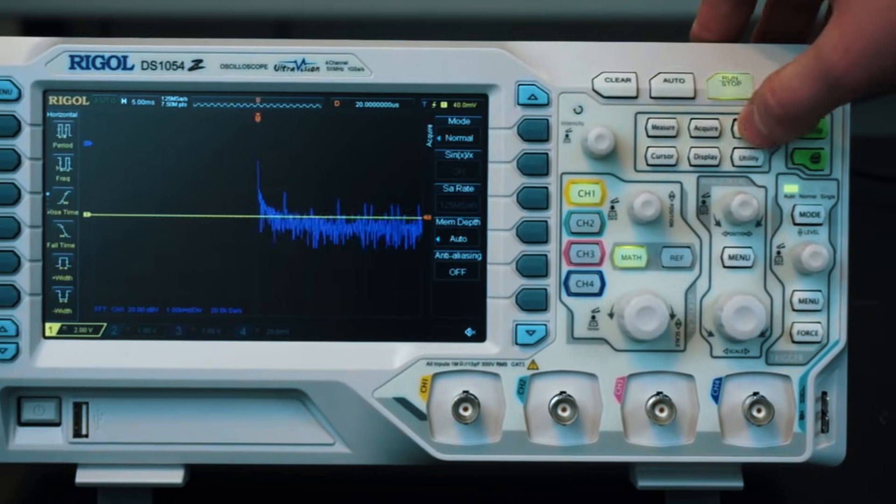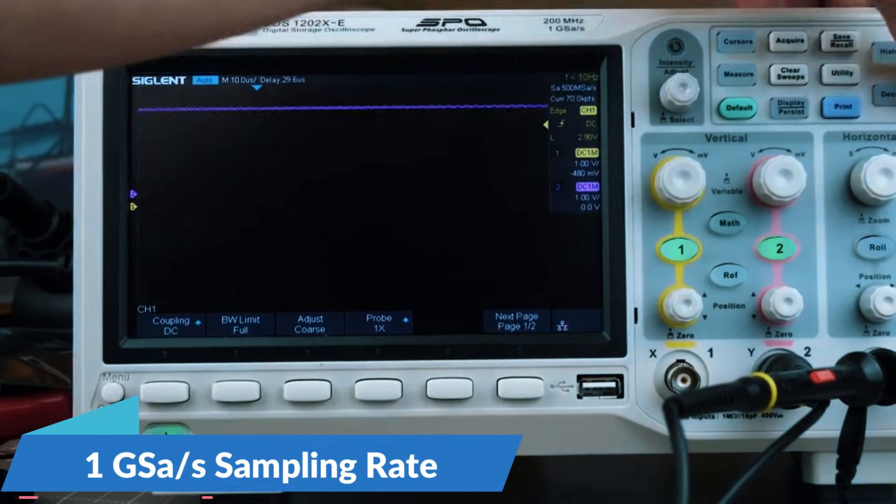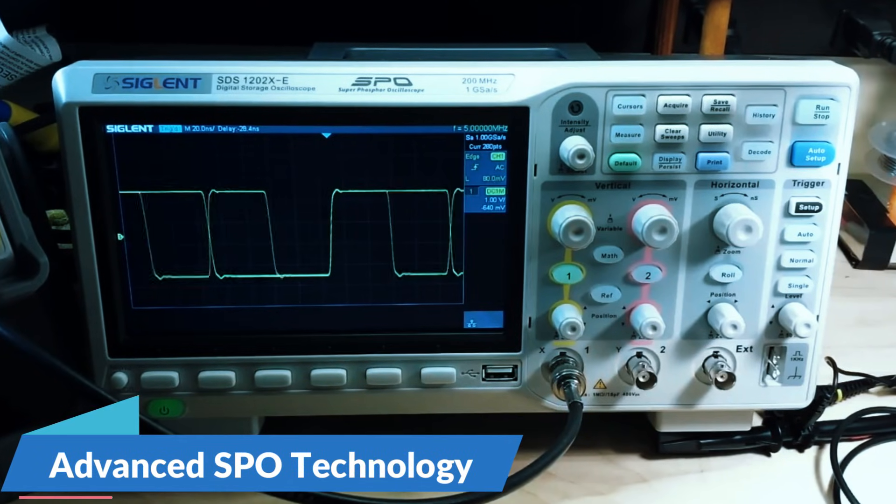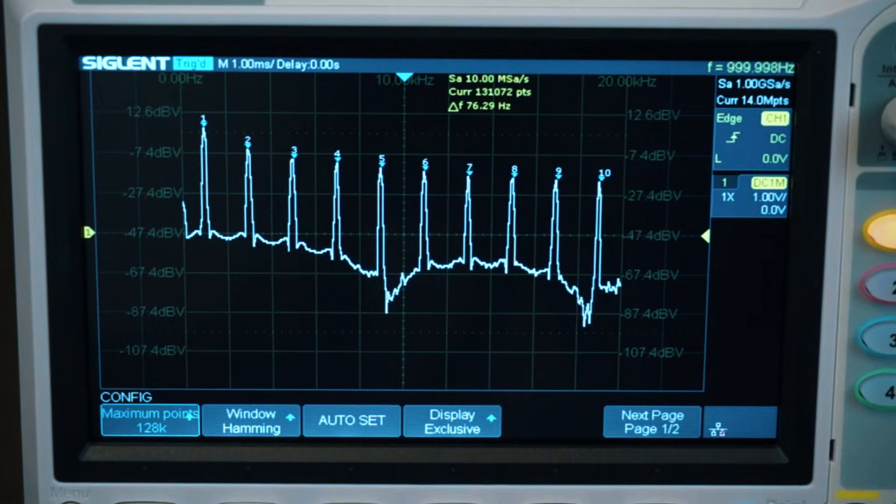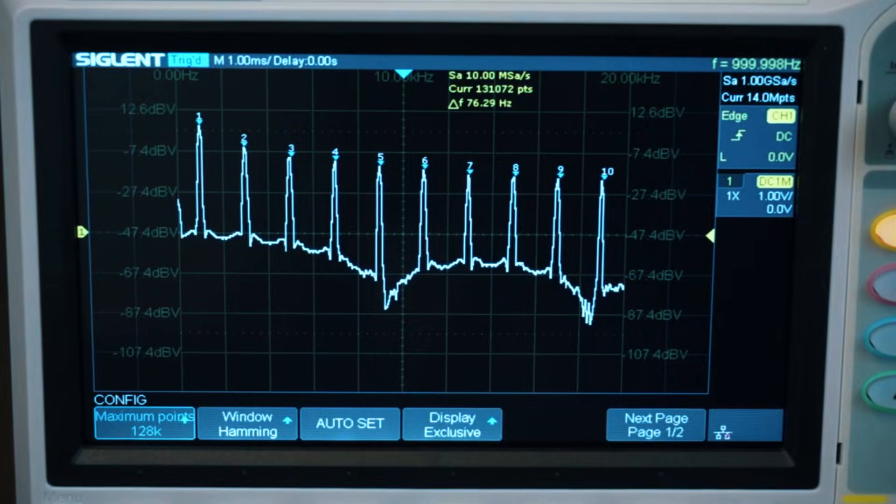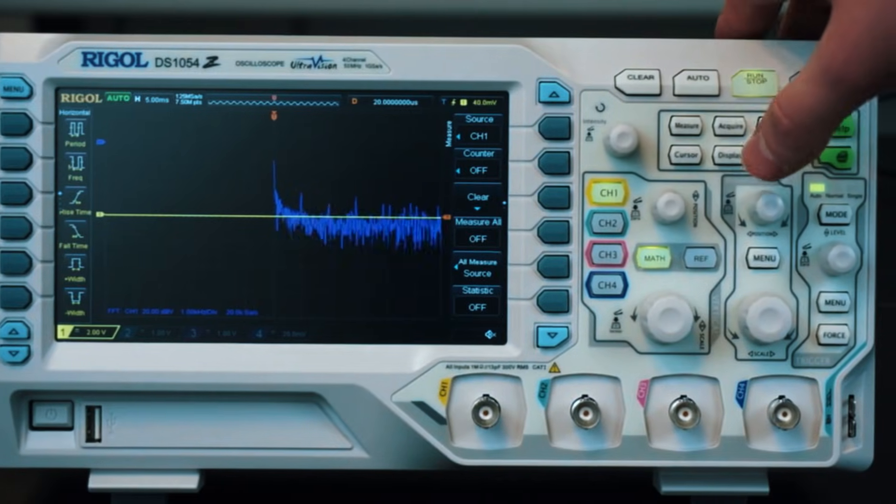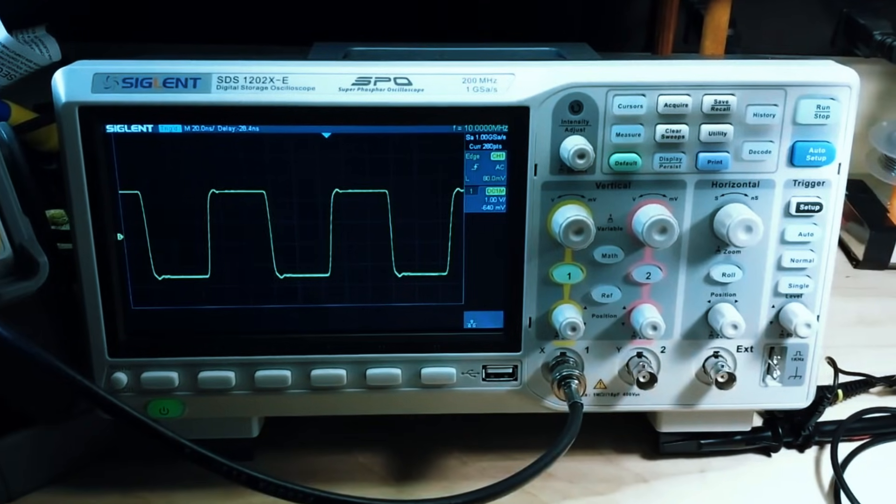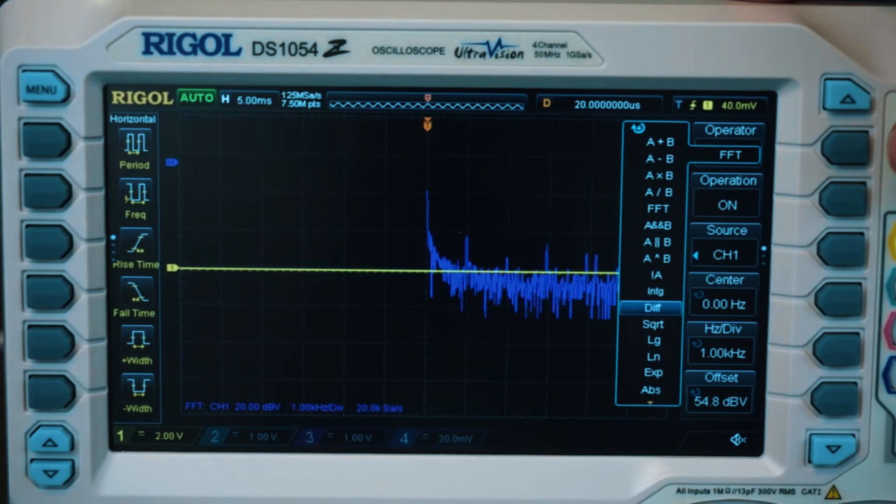The SDS-1202XE comes with a 200 MHz bandwidth and a 1 giga samples per second sampling rate, ensuring that even high-frequency signals are captured with excellent precision. What makes it stand out is its advanced SPO (superphosphore oscilloscope) technology which enhances waveform display, providing sharper signal clarity and reduced noise compared to traditional scopes. Another major highlight is its deep memory storage, allowing users to capture long waveforms without losing data integrity. The multi-level intensity grading is another game changer, making it perfect for in-depth waveform analysis, especially when dealing with analog and mixed signals.